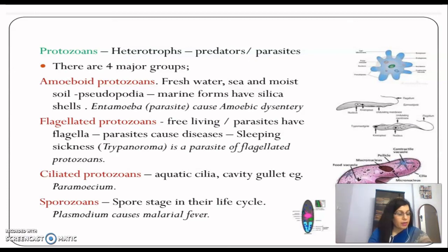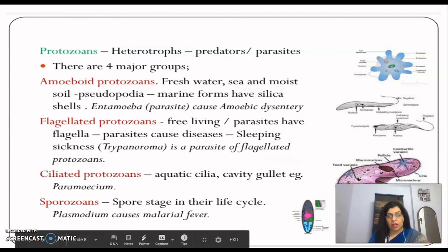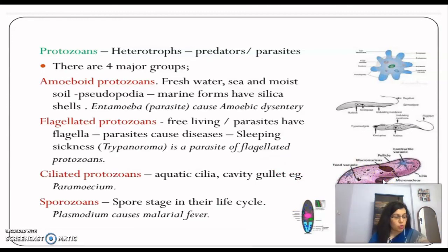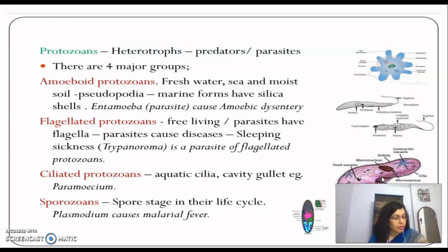Ciliated protozoans are aquatic and actively moving organisms. They have thousands of cilia present on their body. They have a cavity called a gullet — water laden with food is driven into the gullet by the cilia, helping the organism acquire food. A classic example is Paramecium.